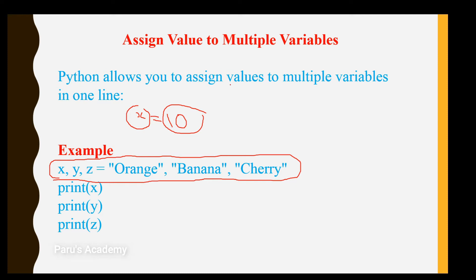Python allows you to assign values to multiple variables. See this example: x, y, z is equal to 'orange', 'banana', 'cherry'. Because they are string variables, that's why we are using double quotes. And we can print x, print y, and print z.